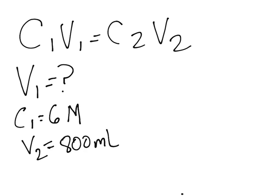Finally, they told us at the beginning of the problem that the concentration of the contact lens rinsing solution is 0.15 molar. So that is the concentration of the diluted solution. This is C2, 0.15 molar.